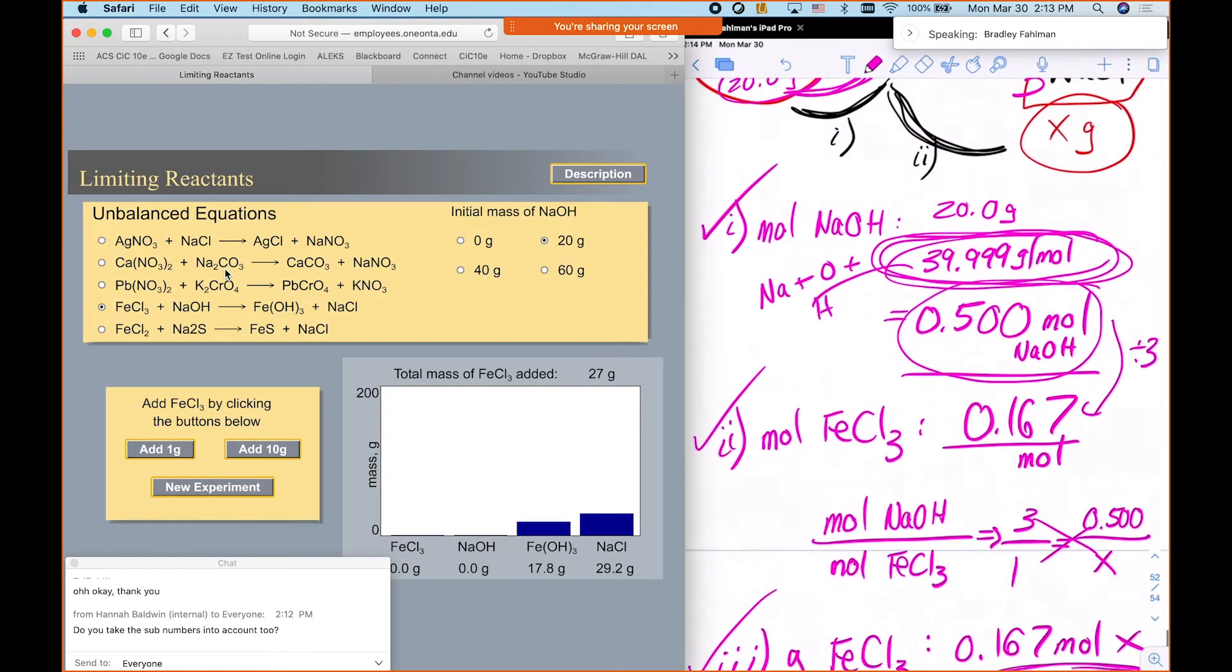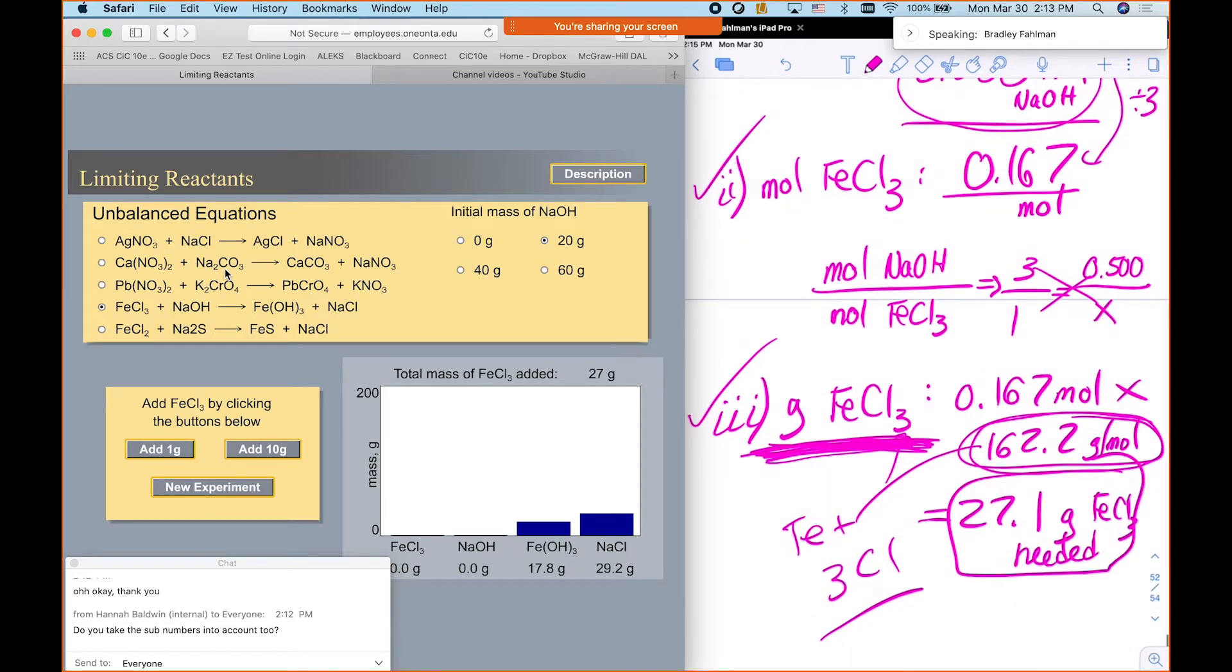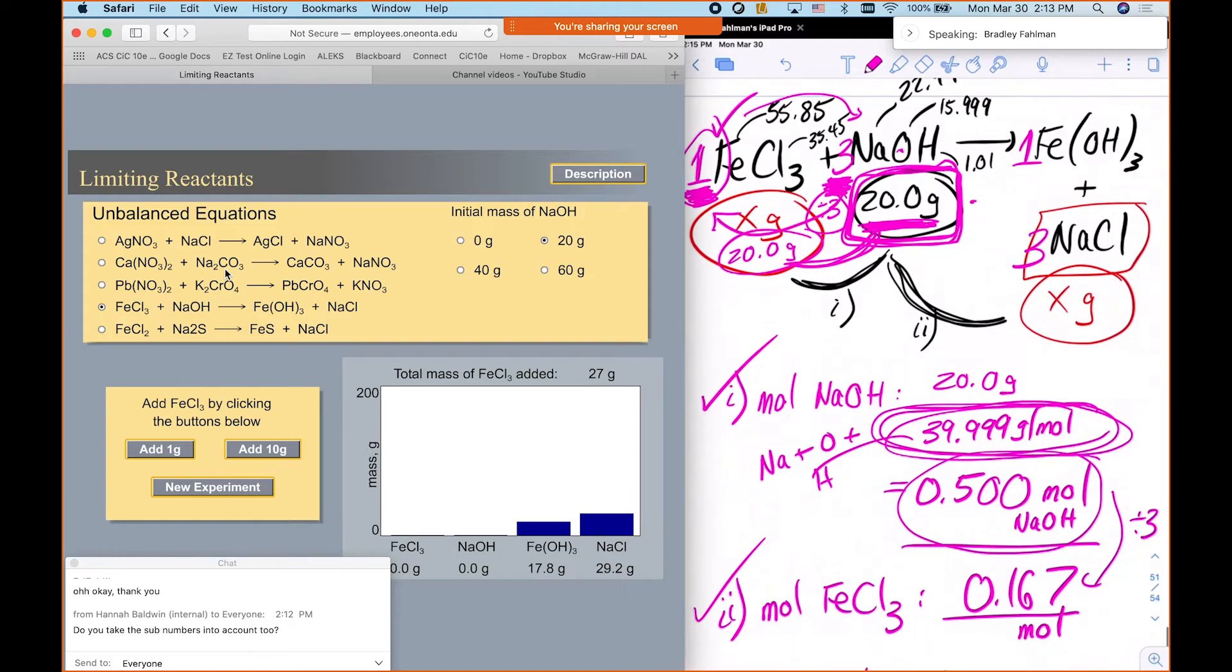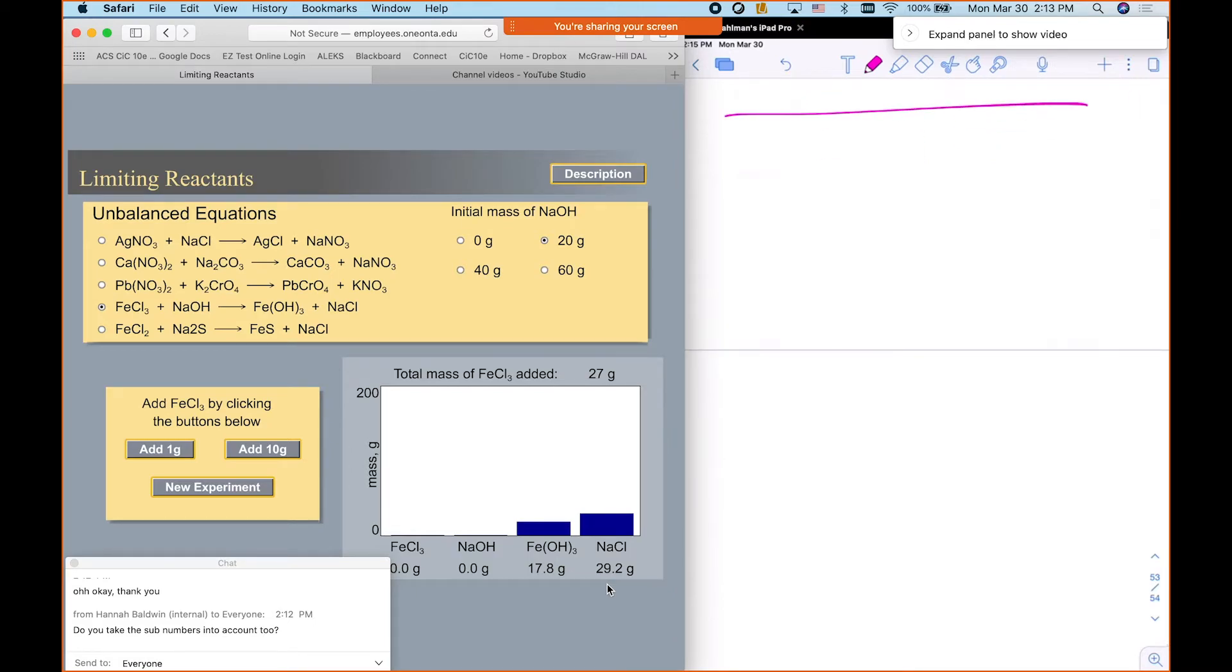Okay. So this is the question, I guess, only one of the two, right? This is saying, if you have 20 grams of sodium hydroxide, you need 27.1 grams of iron chloride to react. Okay. Now, how do you figure out how many grams of sodium chloride you'll produce here? Okay. And so you'll see it here. So our numbers should work out to 29.2. Okay. So let's do the calculation to prove that.